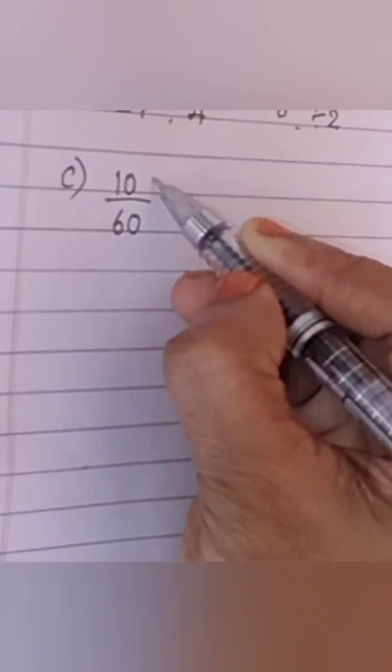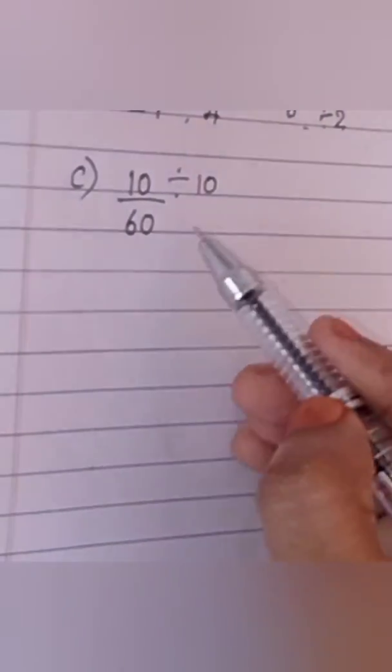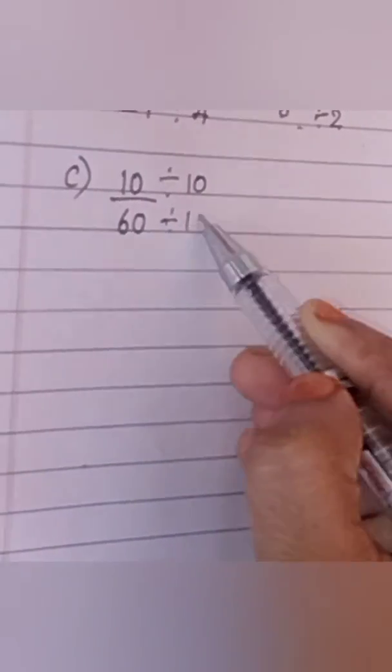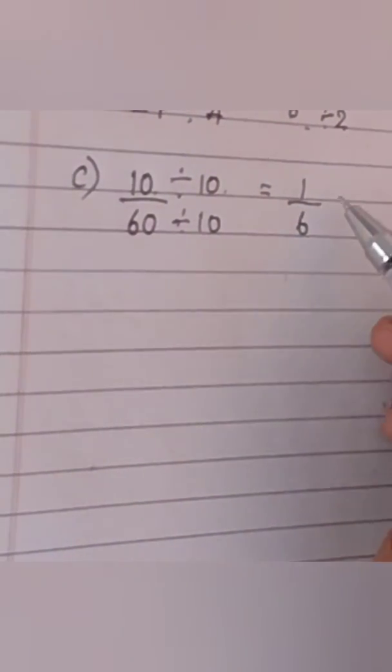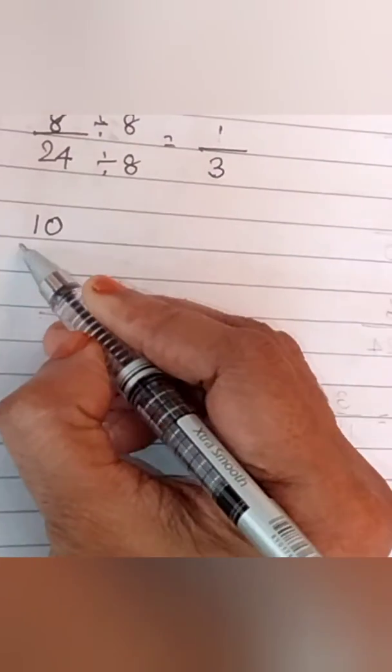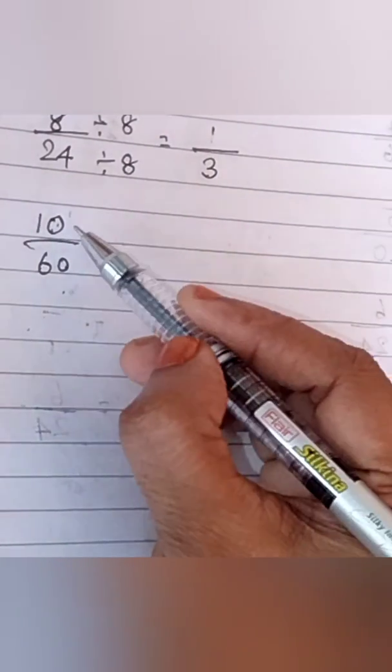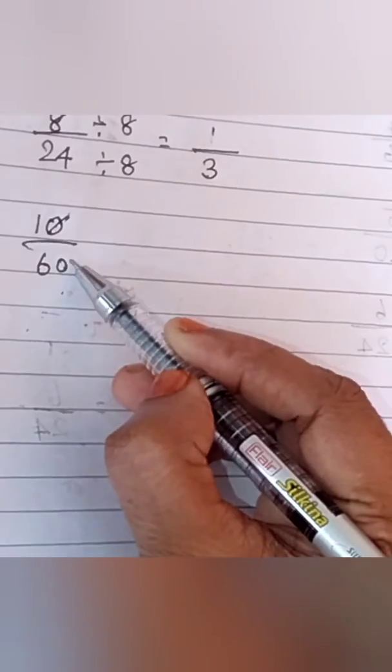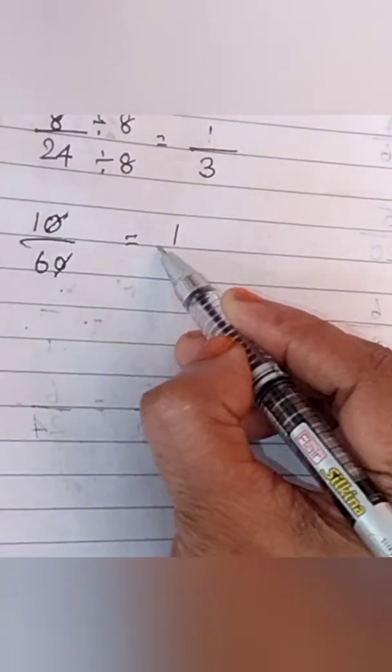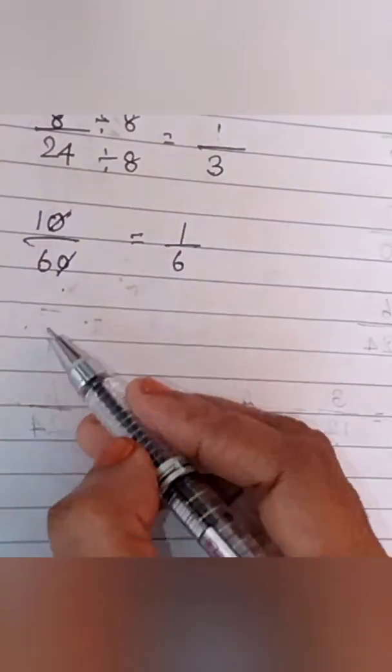Next, 10 by 60. This also I will show in two methods. 10 divide by 10, both numerator and denominator. 10 1s are 10 and 10 6s are 60. Our answer is 1 by 6. As we cannot divide this again, we will stop with this. Other method is 10 by 60. We have 0s in the numerator and denominator. We can cut those 0s and we can write the answer as 1 by 6.